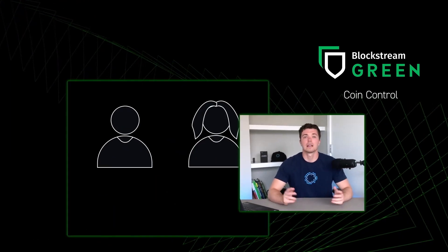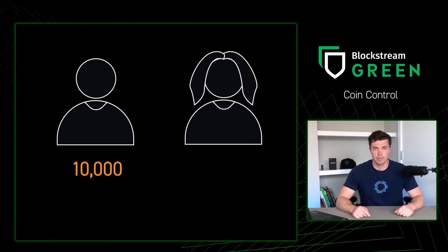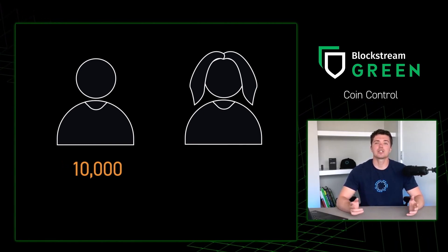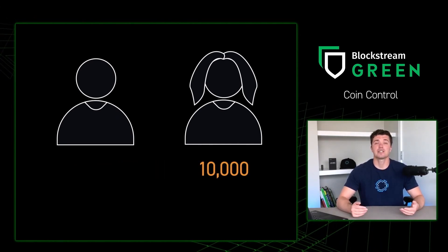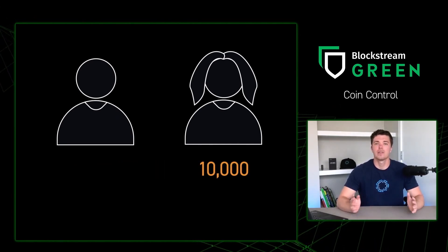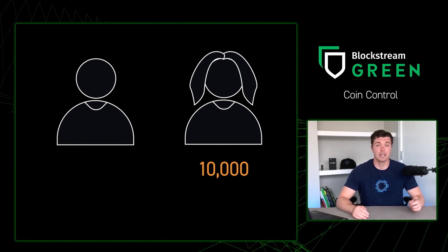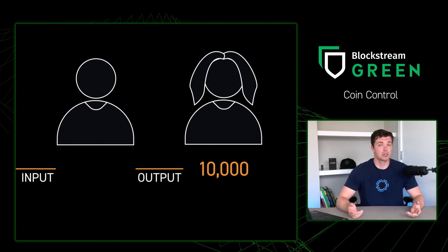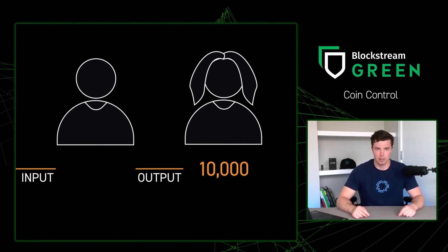For this example, let's use Bob and Alice. Let's say that Bob receives 10,000 sats from work — he receives this in one input. Later in the week, he goes to pay Alice 10,000 sats, and he does this in one output. This is the simplest form of a Bitcoin transaction, known as a one-input, one-output transaction, as there was only one input to Bob's wallet and one output from Bob's wallet.